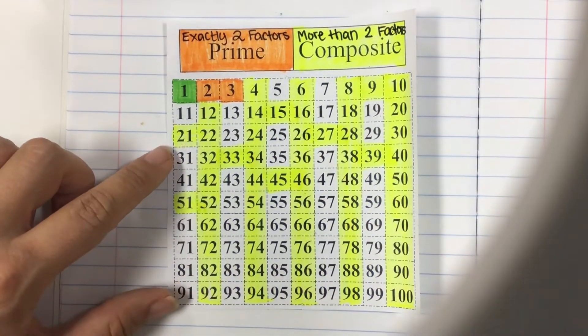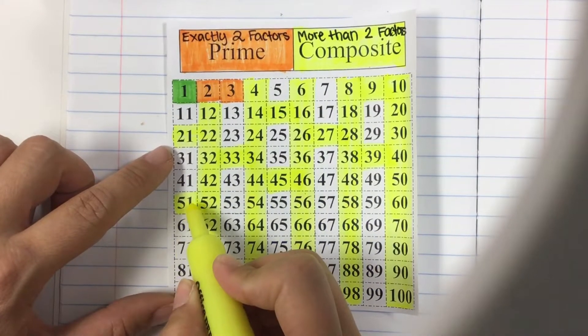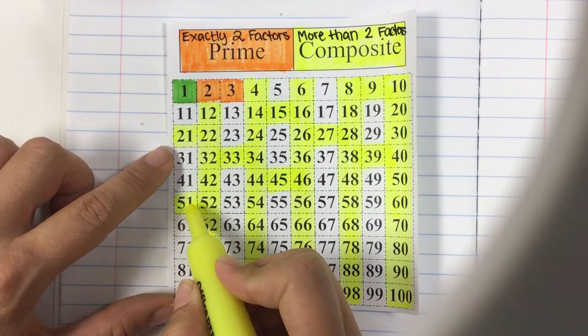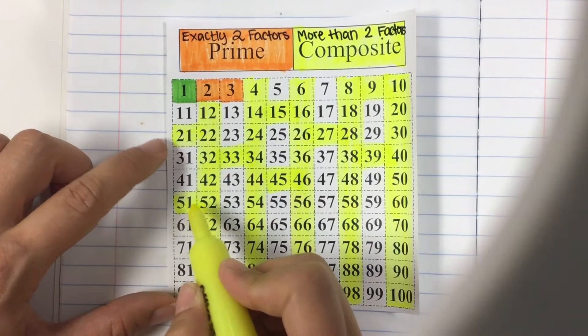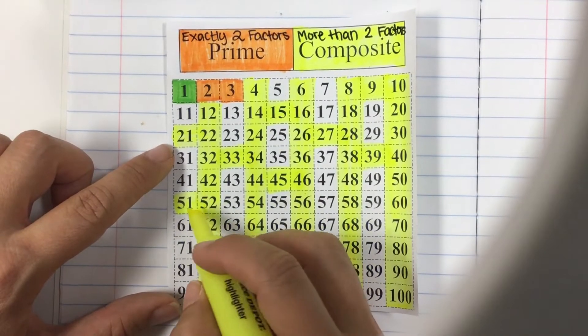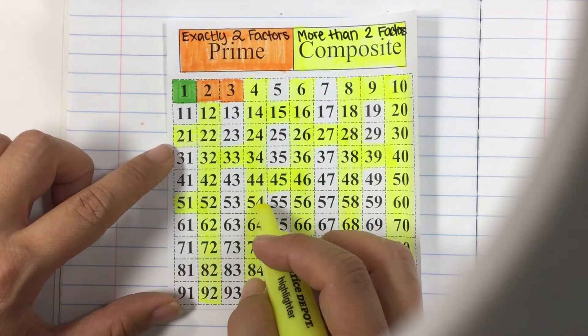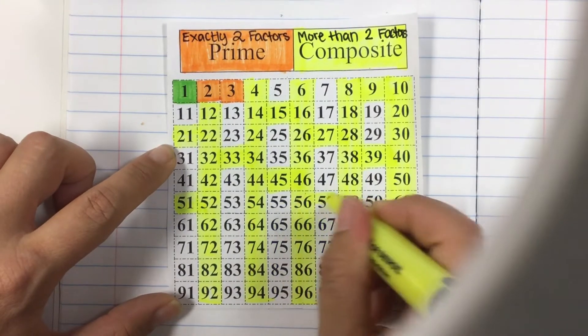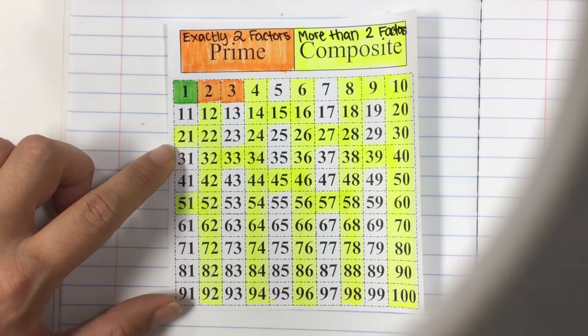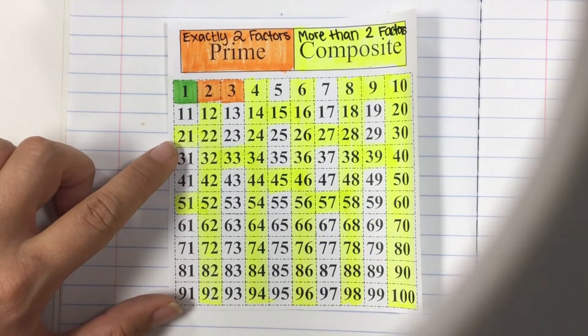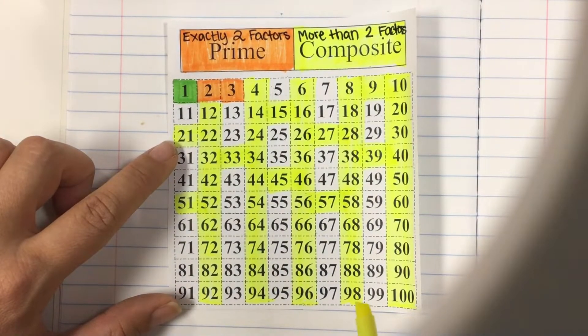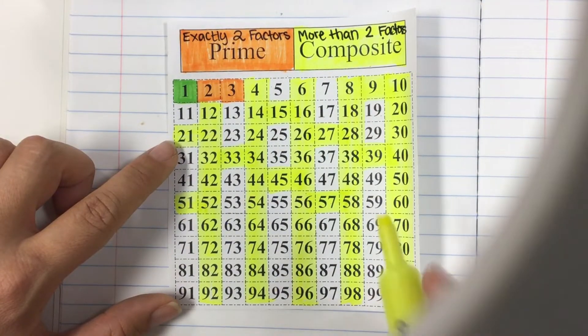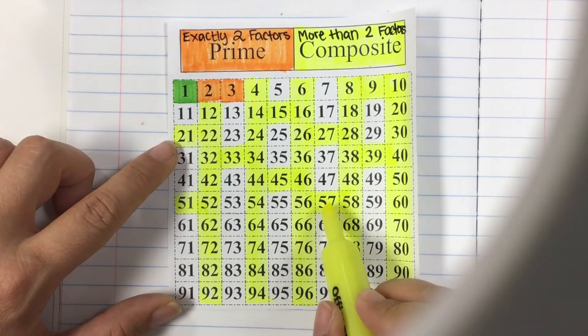You can also check this with your divisibility rule. 5 plus 1 is 6 which is a multiple of 3, so we know that we can divide that by 3. A lot of times people might think 57 is prime but we notice that 5 and 7 make 12 which is a multiple of 3. So it is divisible by 3 if we were to divide it out.